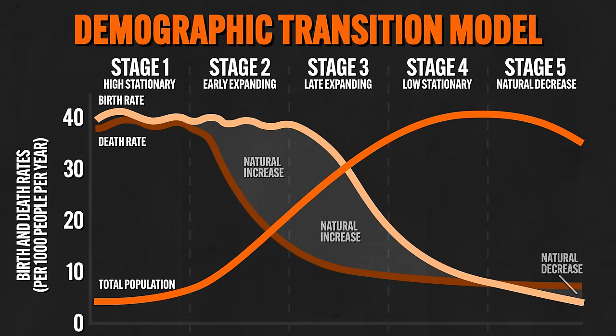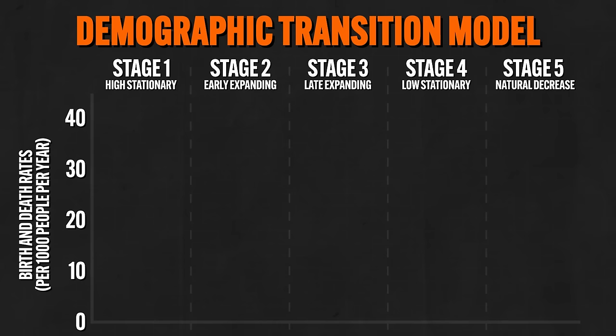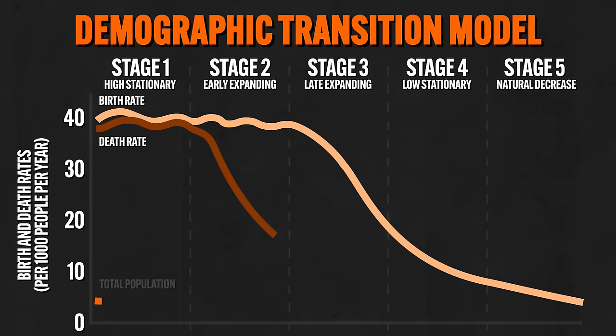Now let's look at two theoretical models that attempt to explain population growth. First is the demographic transition model (DTM), a graph that attempts to explain growth and changes in human population over the course of history by considering birth and death rates. Keep in mind this model was created to explain European and American populations, so it might not be as useful for other areas of the world. The model charts how crude birth rate, crude death rate, and rate of natural increase change as a society passes through different phases of history.